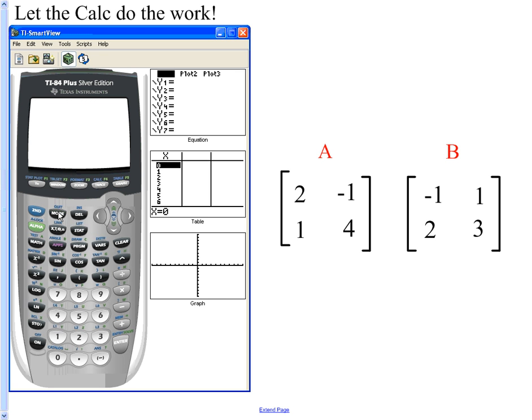I go back to the home screen—second, quit to get to the home screen. That's like your table. And now we want to take out matrix A and then we want to multiply and then we want to take out matrix B. So I'm gonna go matrix A—see how it's on my home screen now? And then I say times, and then I pull out matrix B, going into the matrix again and B.